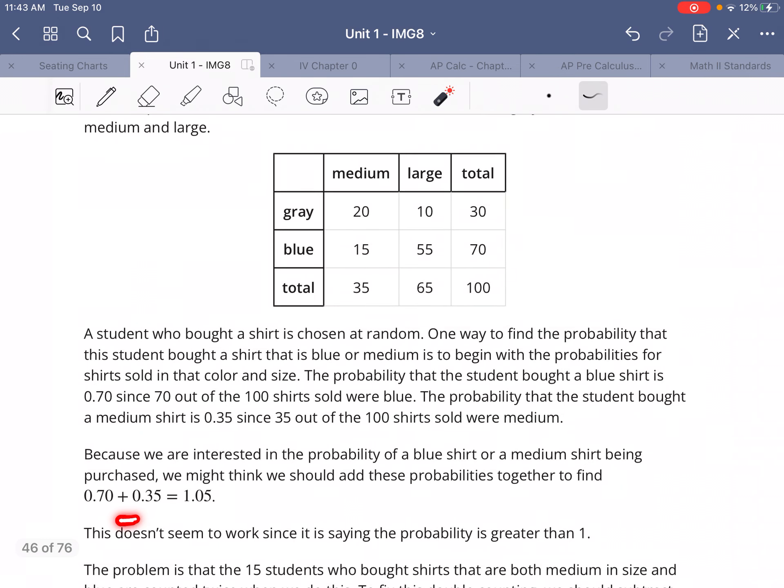But we can't just add those together. What's happening if we just add those together is you can see right here, we have 15 students who got counted twice.